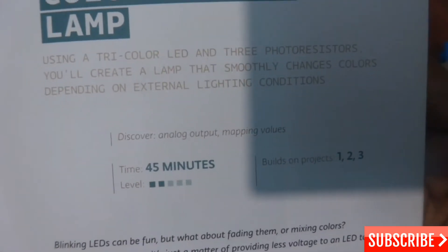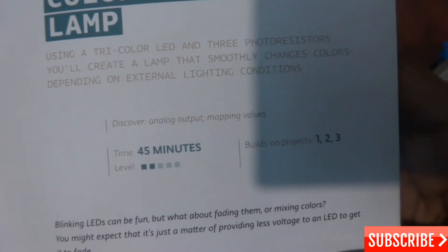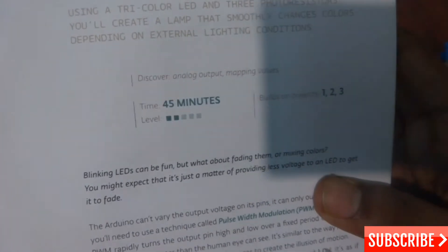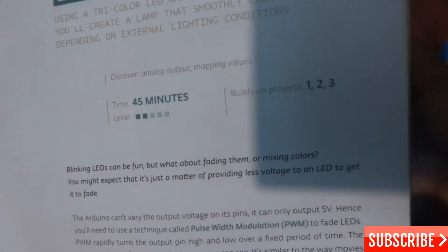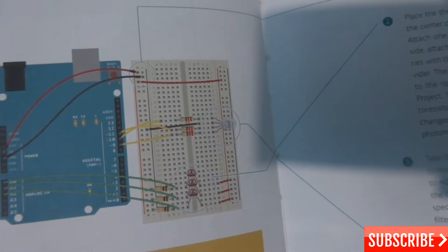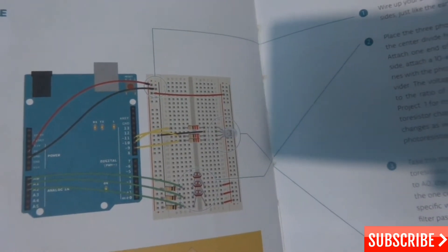Instead of using a tri-color LED and 3 photoresistors, we'll create a lamp that smoothly changes colors depending on external lighting conditions. It's written time is 45 minutes for making this, level 2. So let's get started.